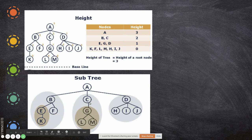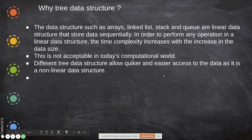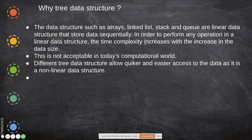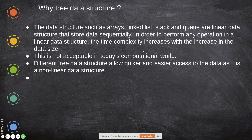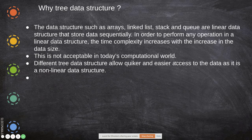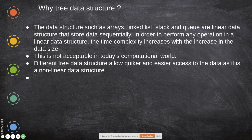Why do we need a tree data structure? Arrays, linked lists, stacks, and queues are linear data structures that store data sequentially. To perform any operation in a linear data structure, time complexity increases with the increase in data set size. If you have a thousand linked list nodes and want to access the thousandth data, you have to pass through all 999 data before it — this takes too much time, which is not acceptable in today's computational world with voluminous data.